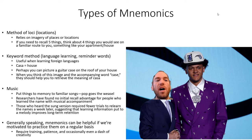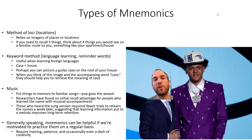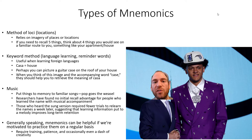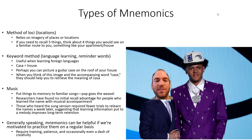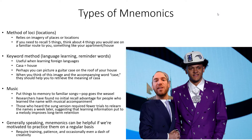Types of mnemonics include the method of loci, which relies on imagery of places or locations. If you need to recall four things, imagine them placed along a familiar route — like your drive home. Bananas are at the stop sign, dog food at the mailbox, cereal at the front door. The idea is to take things you need to remember and place them cognitively on familiar routes as a memorization strategy.